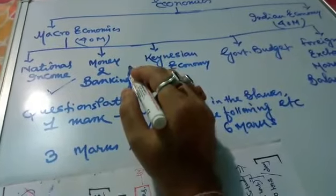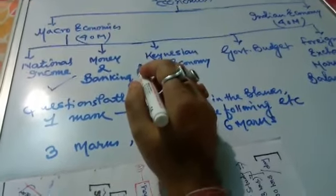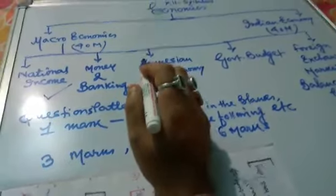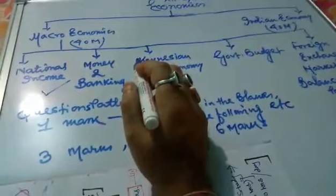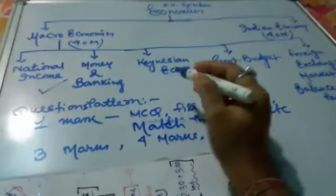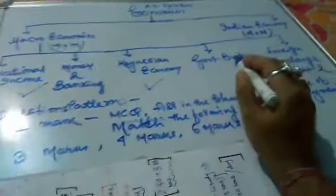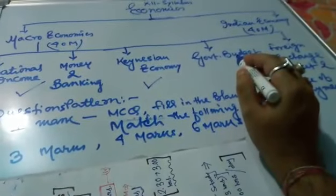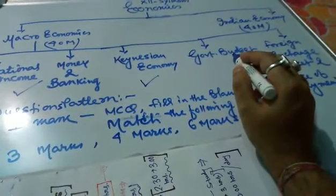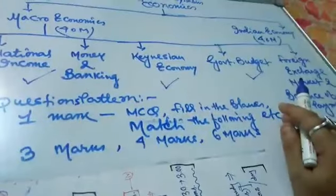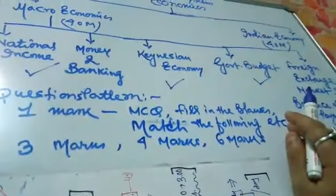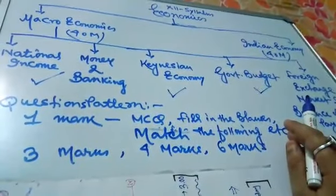We will start with the basic concepts and learn each chapter step by step. We will cover national income, Keynesian economy, and the common budget thoroughly. I will also ask you the numerical part — it is very easy and with practice it will be manageable for you.